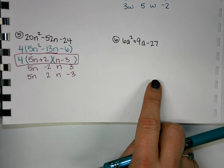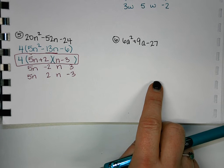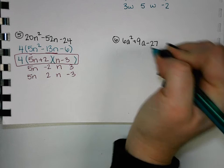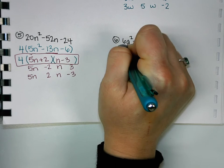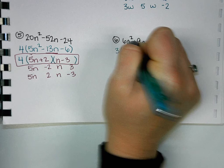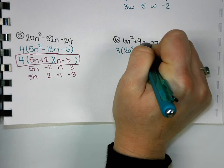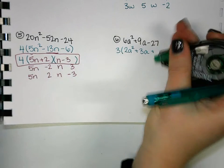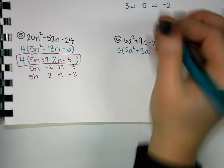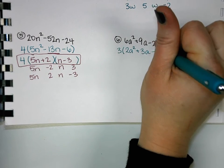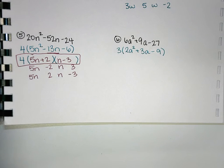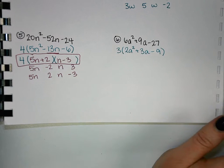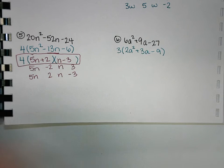Last one here. Start with GCF. Is there a GCF? What's our GCF? 3. So then we'll divide all of our numbers by 3. With what's left inside, do we have difference of squares? Nope. So we're going to go to our trinomial factoring.